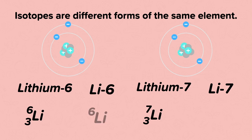Not all the ways of writing isotopes have the atomic number listed. This is because we have the element name or symbol written there. If it's lithium it has to have three protons, because the number of protons determines the element. If it didn't have three protons it wouldn't be lithium.